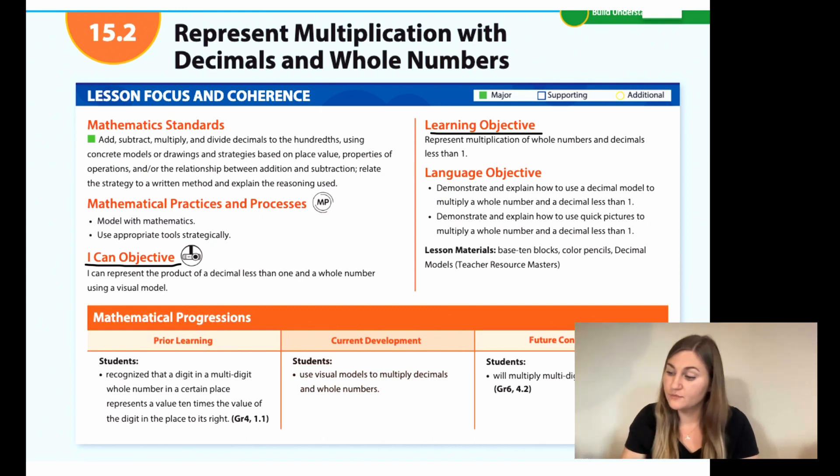The learning objective is to represent multiplication of whole numbers and decimals less than 1. The prior learning is that students recognize that a digit in a multi-digit whole number in a certain place represents a value 10 times the value of the digit in the place to its right.